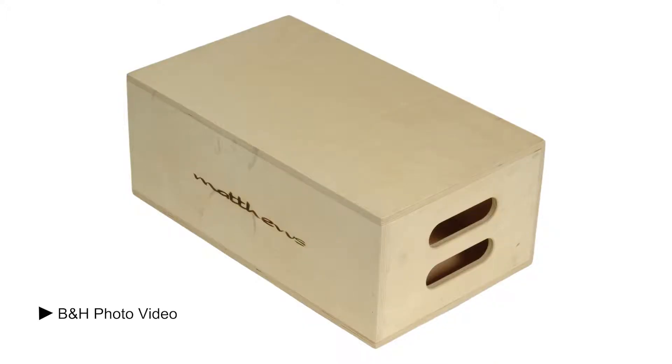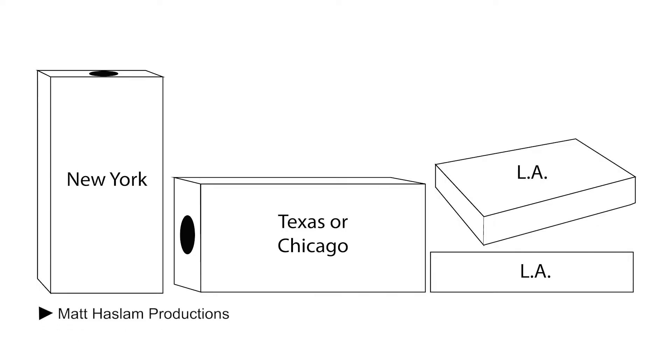Apple box. These are simple, wooden boxes used to elevate props, set pieces, or stands on set of a production. These come in many different sizes, including full apple, half apple, quarter apple, and pancakes. Apple box positions: New York, Texas, Chicago, and L.A. All four of these terms are used by directors to tell crew how to place an apple box. A director might call the same position either Texas or Chicago, depending on which side of the country they are from, or which term they learned growing up in the film industry.